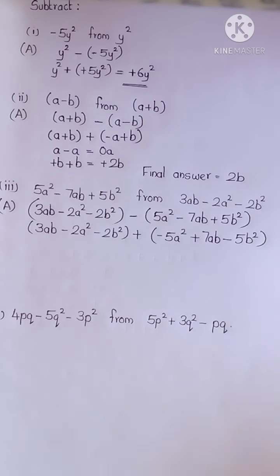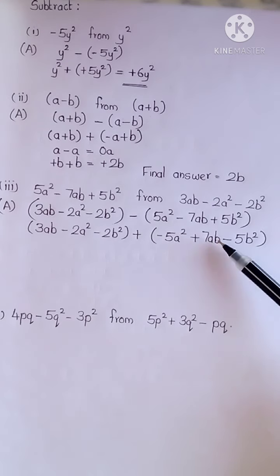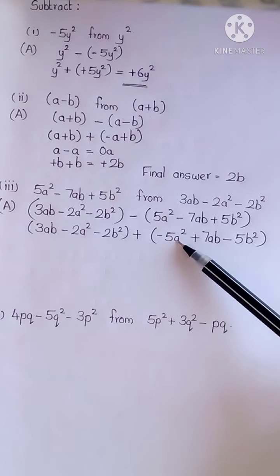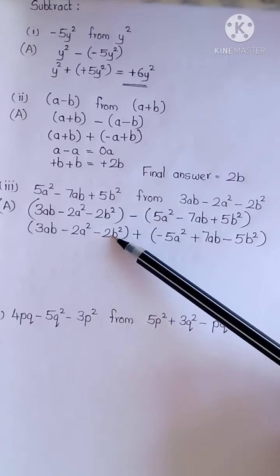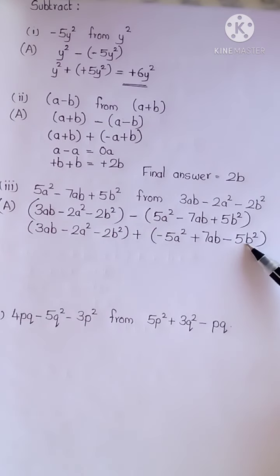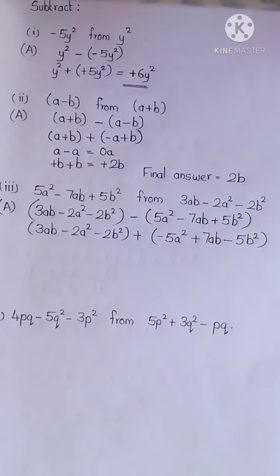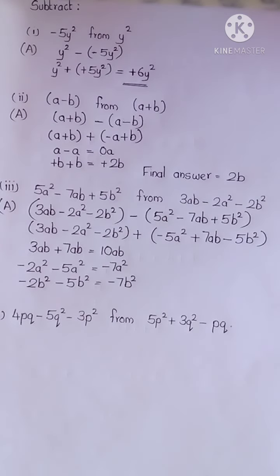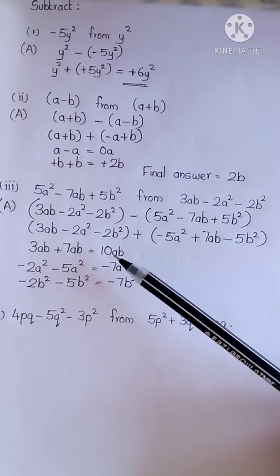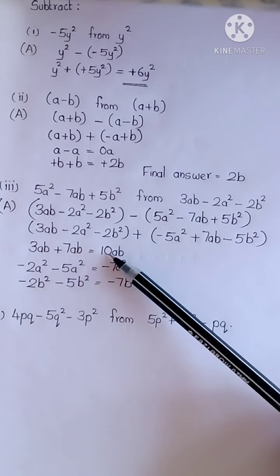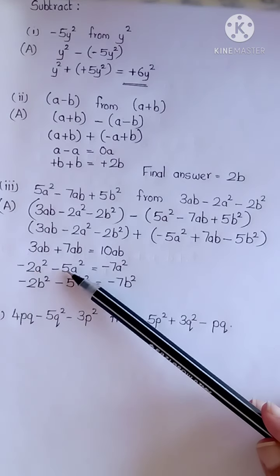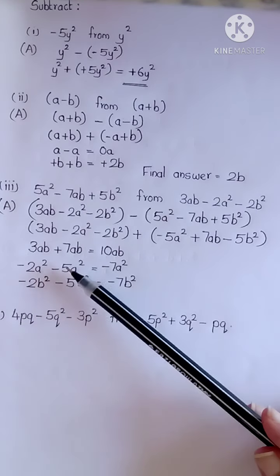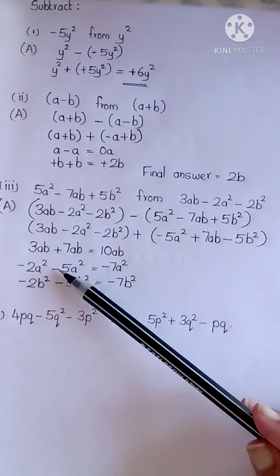Now combine the like terms: 3ab plus 7ab, minus 2a square minus 5a square, minus 2b square minus 5b square, and then apply the rule of addition. Now I have applied the rule of addition. 3 plus 7 equals 10. Here both the numbers are negative, so you will add: 2 plus 5 equals 7, with a negative sign.